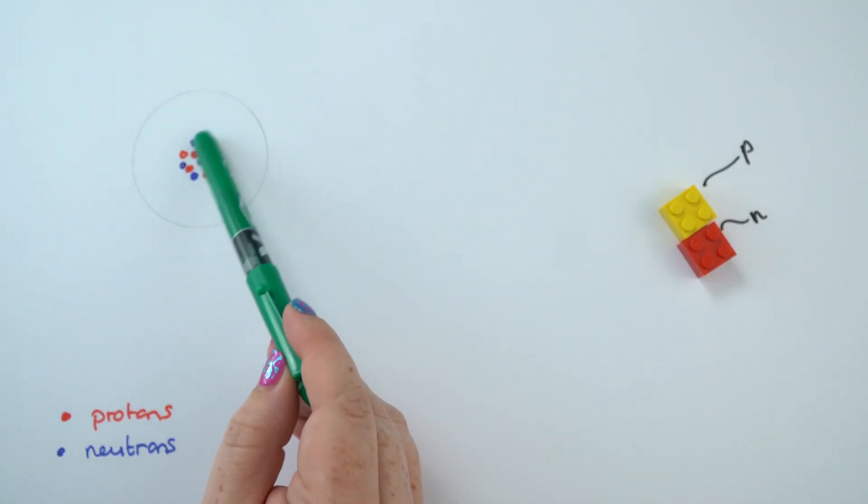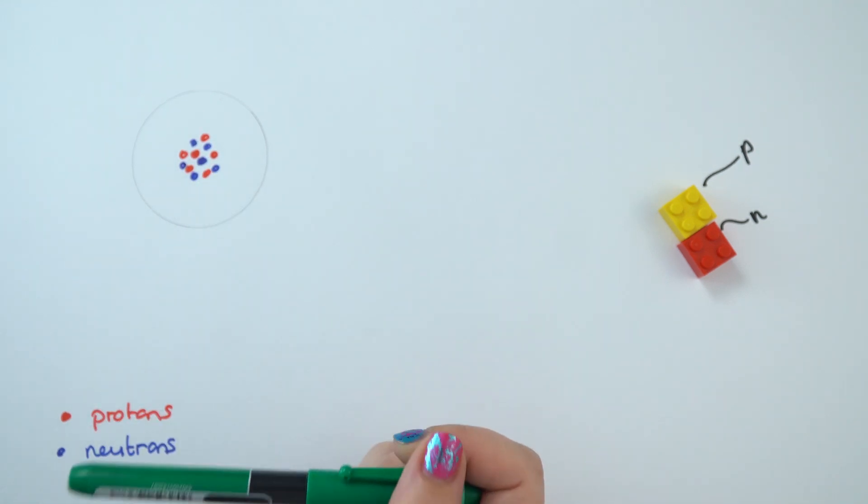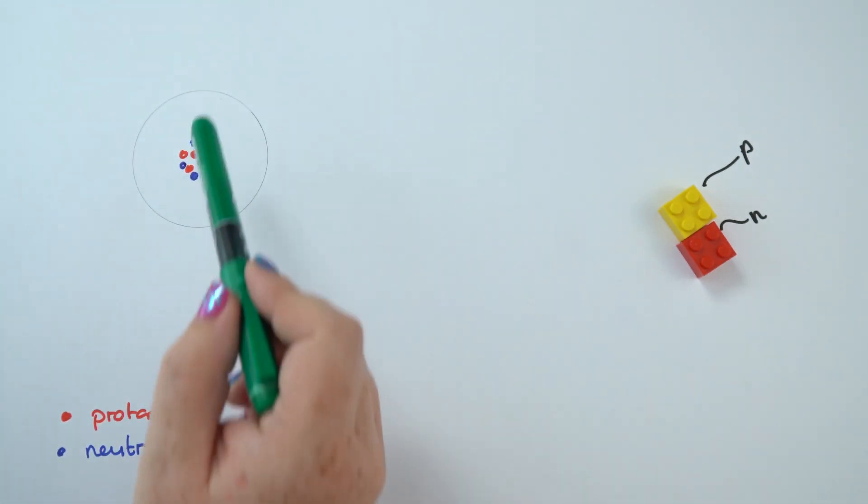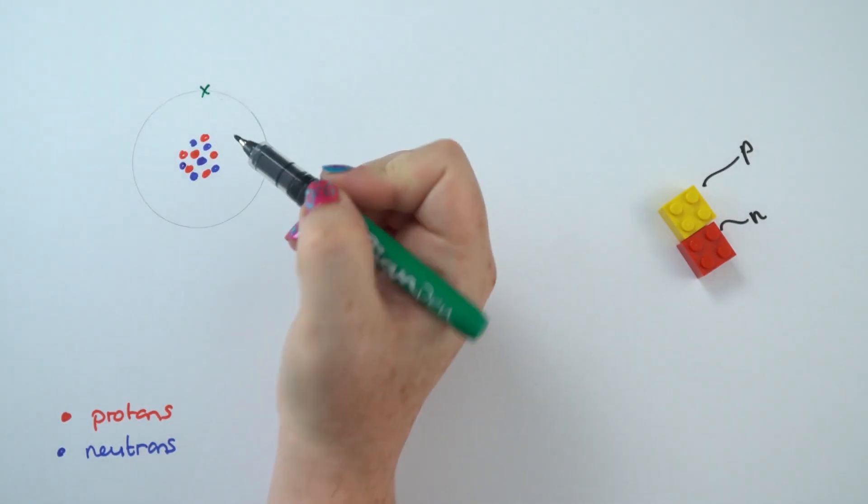And this bit here, where all the mass is, this is the nucleus. Now those of you paying attention might have noticed that I've just drawn a circle around the nucleus. In this circle around the nucleus live some electrons.